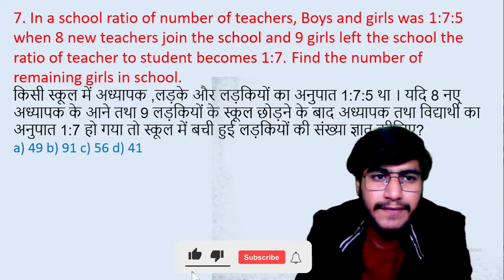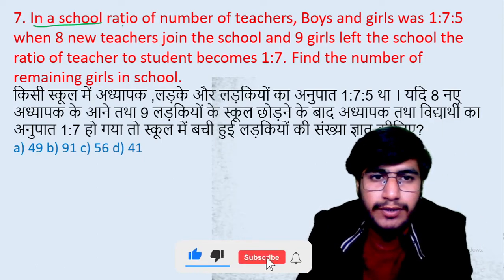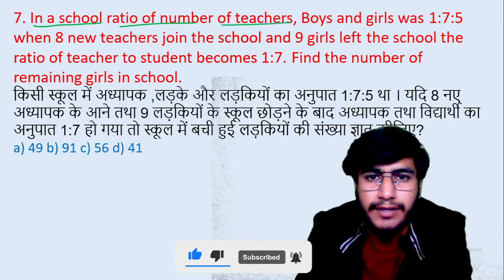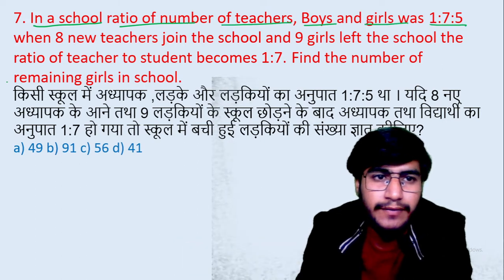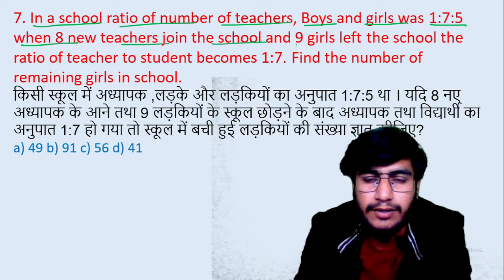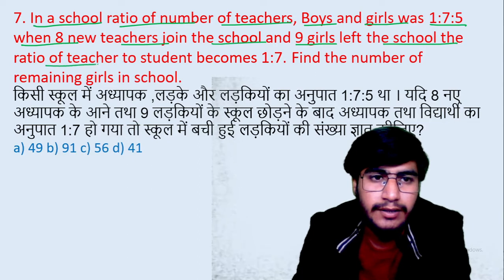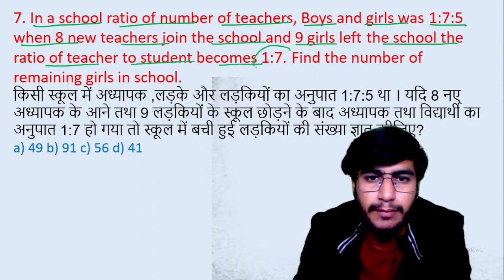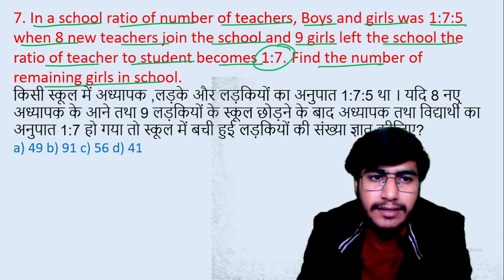Question number 7: In a school, the ratio of number of teachers, boys, and girls was 1 ratio 7 ratio 5. When 8 new teachers joined the school and 9 girls left the school, the ratio of teachers and students became 1 ratio 7. Find the number of remaining girls in the school.